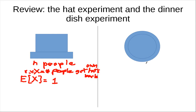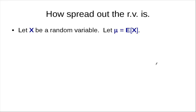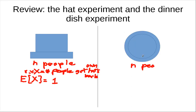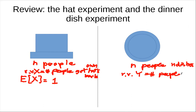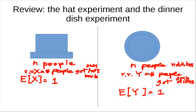We also look at another experiment, which is the dinner dish experiment. There again, there are N people and N dishes. We have random variable Y be the number of people who get their own dish back. We figure out that the expected value of Y is also 1. But after the later exercise, we find that these two random variables X and Y, while they have the same expectation of 1, they are different.